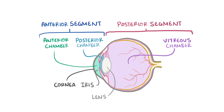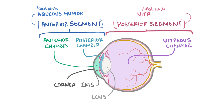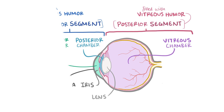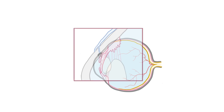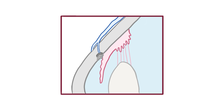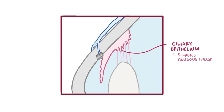Typically, each of these chambers is filled with fluid. The chambers in the anterior section are filled with a liquid called aqueous humor, and the posterior section is filled with vitreous humor. The aqueous humor is a transparent, watery fluid that's secreted by the ciliary epithelium, which, in addition to secreting aqueous humor and providing nutrients to the lens and cornea, provides structural support and helps to keep the shape of the eye.